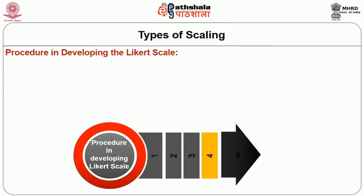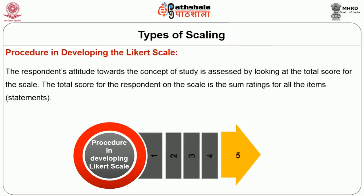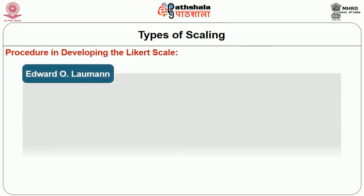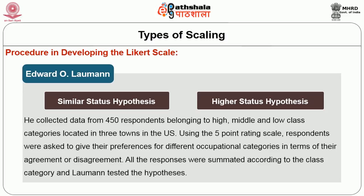In the next step, through calculation of correlation between the statement and the total score, a set of statements is selected — those statements having high correlation with the total score are selected. Thus, the Likert scale is developed. The scale is administered to the respondents who are asked to rate their responses on a 1 to 5 scale, with 1 indicating strong disagreement moving further to 5 which indicates strong agreement. The respondent's attitude towards the concept is assessed by looking at the total score. Using the Likert scale, Edward O. Lawman attempted to test the similar status hypothesis and higher status hypothesis in his study, collecting data from 450 respondents belonging to high, middle, and low class categories located in three towns in the US. This study was conducted in 1965, and respondents were asked to give their preferences for different occupational categories using the 5-point rating scale.